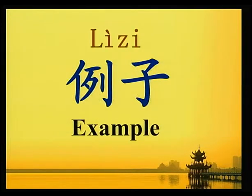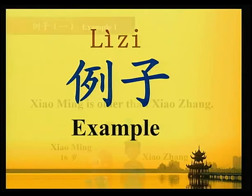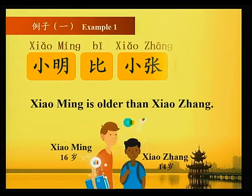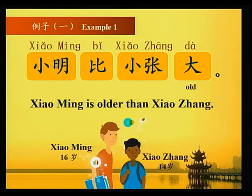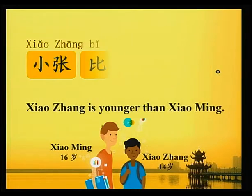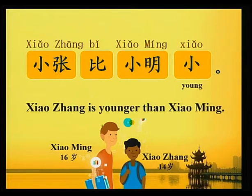例子 Example. 例子一 Example one: 小明十六岁，小张十四岁，所以 小明比小张大 — 小明 is older than 小张. 小张比小明小 — 小张 is younger than 小明.